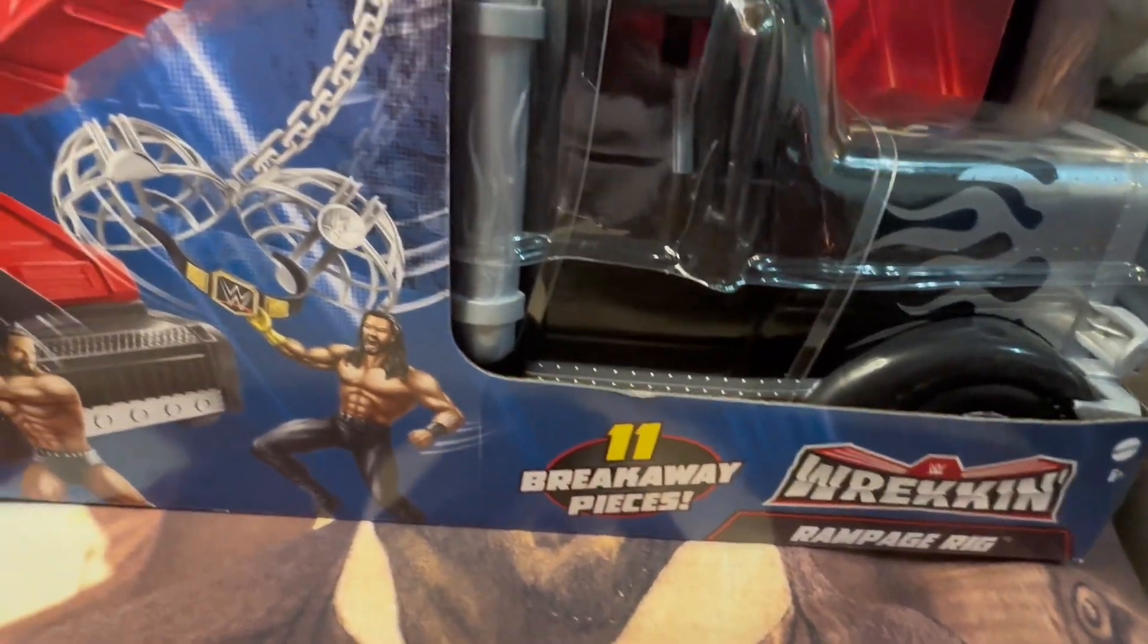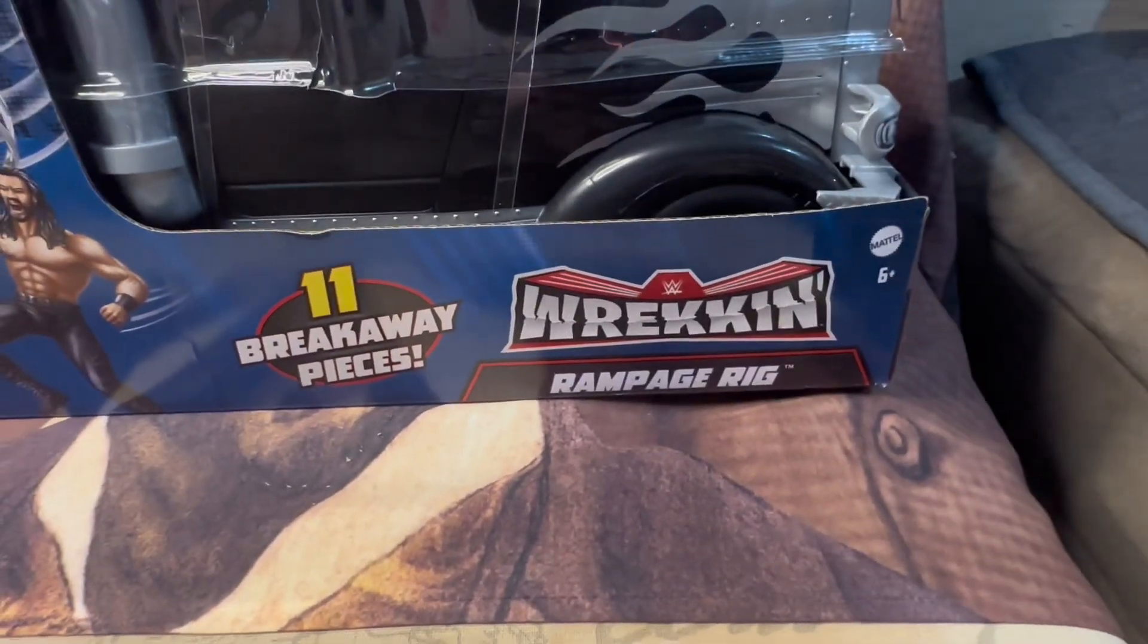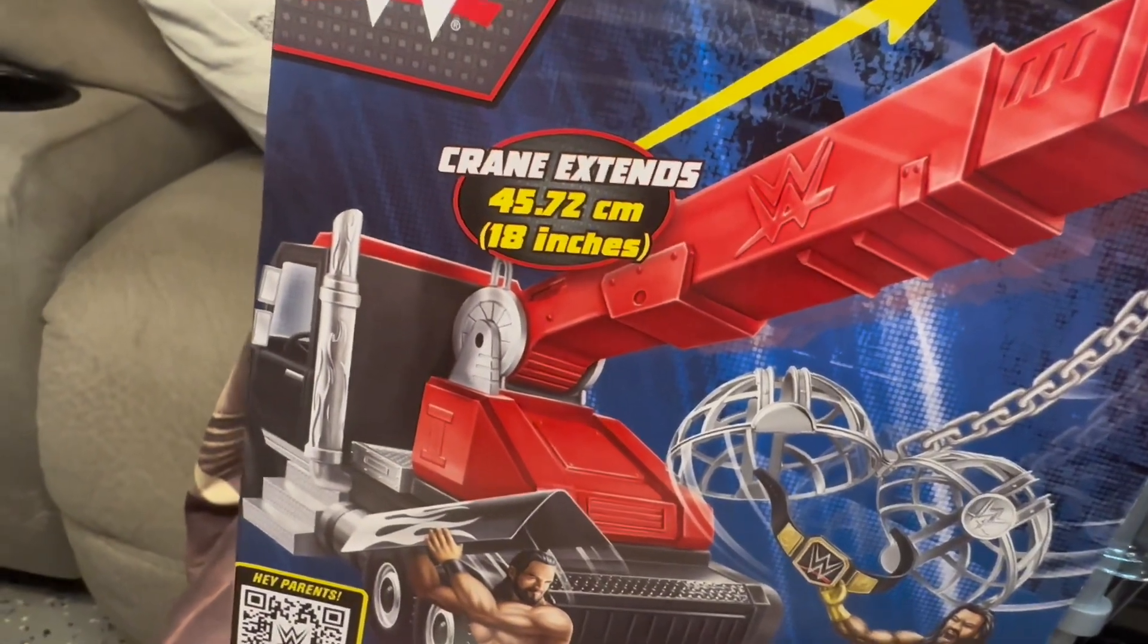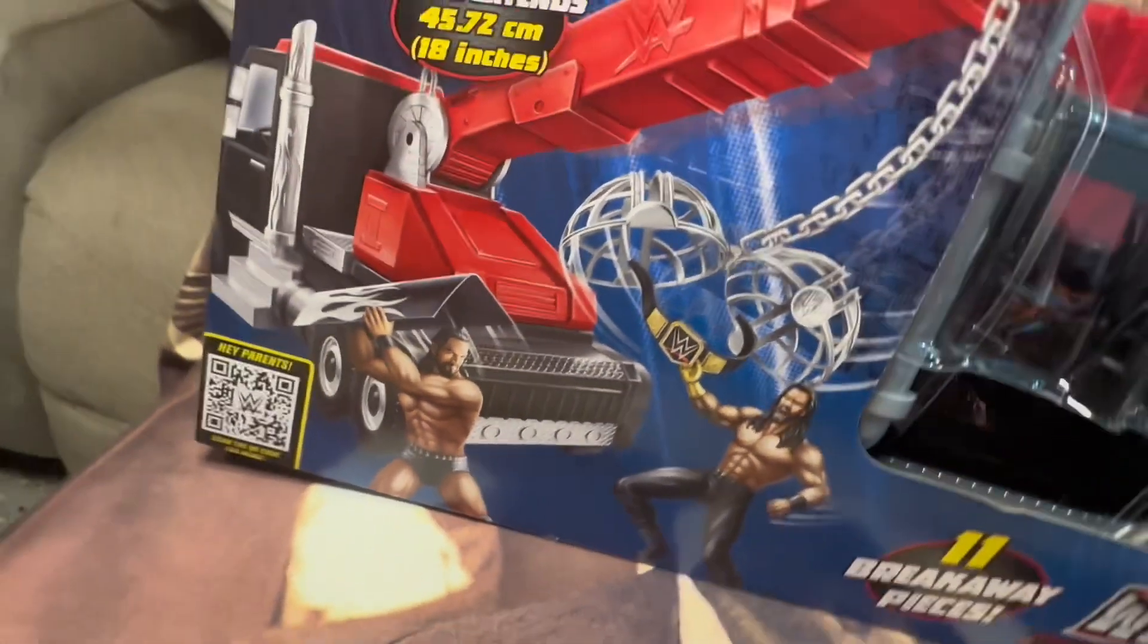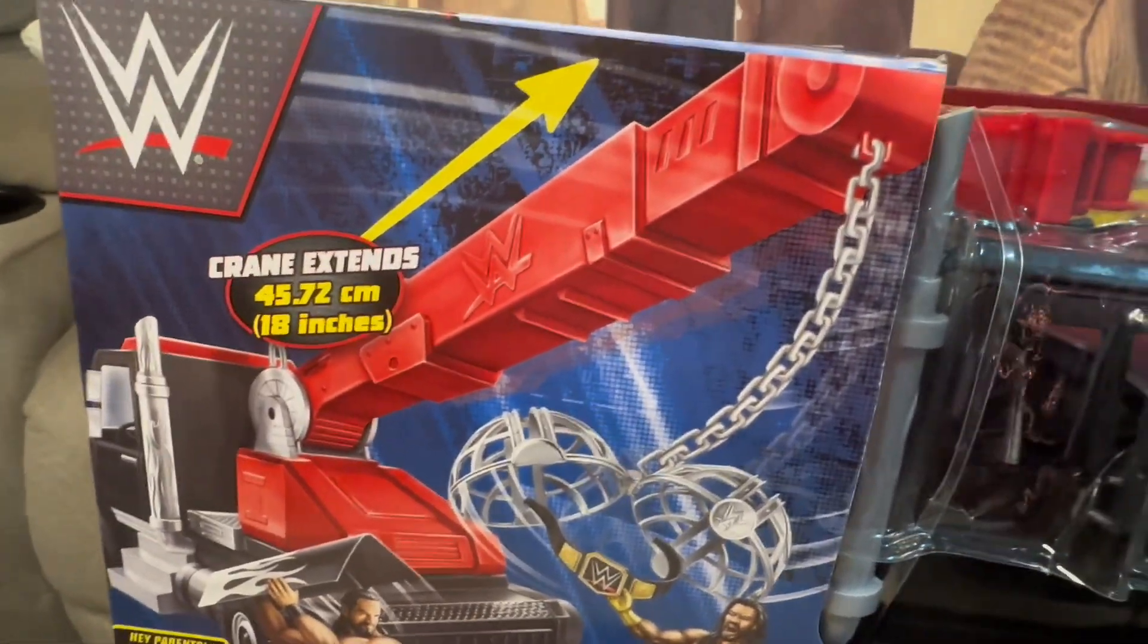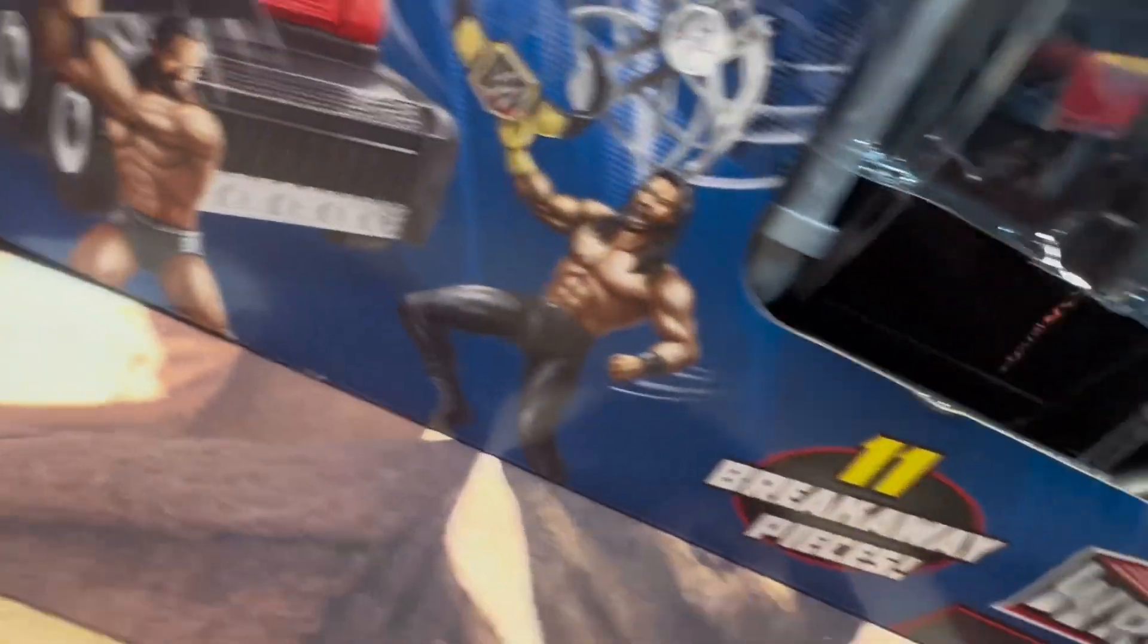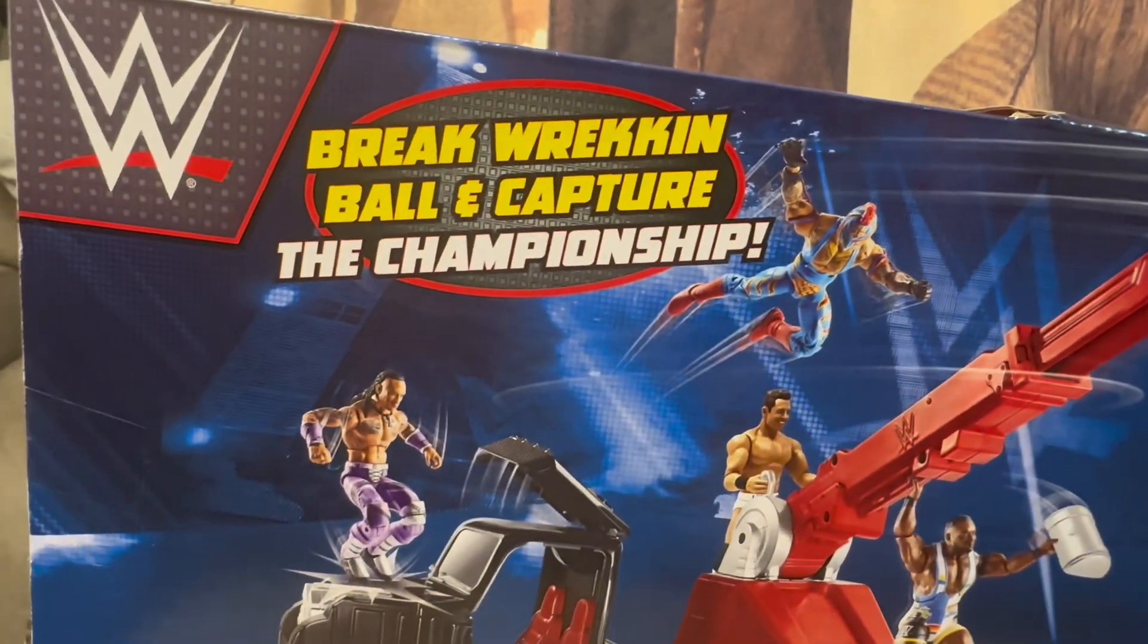It's got 11 breakaway pieces. The crane extends 45.72 centimeters, that is also 18 inches. You get a QR code right there. Cool artwork here on the front, it's a little cartoony but it looks all right. I'm not sure if this thing comes with that belt or not. You got Drew McIntyre on the front, Roman Reigns.